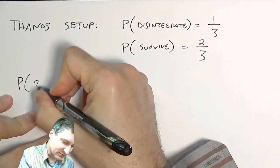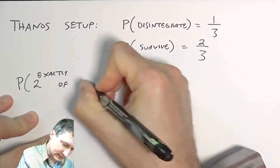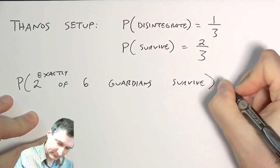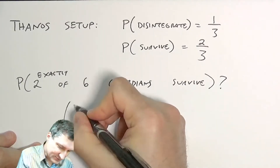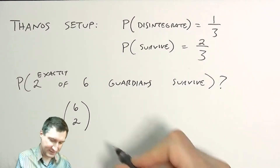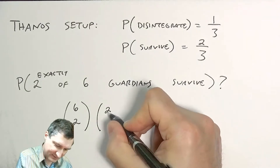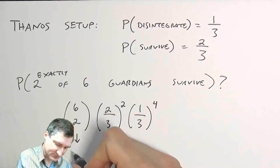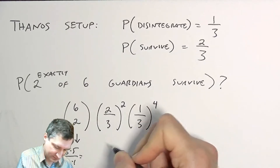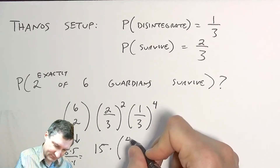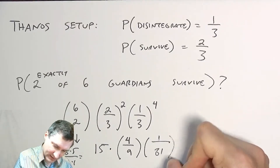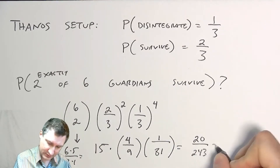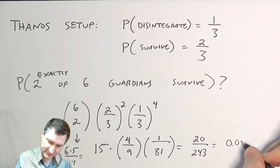What is the probability that exactly two out of the six Guardians of the Galaxy survive? There are six choose two ways of choosing two Guardians. The probability that exactly two survive is (2/3)^2 times (1/3)^4. Six choose two is 15, two-thirds squared is four-ninths, and one-third to the fourth is 1/81. Multiplying these together gives 20/243, which is about 0.08.